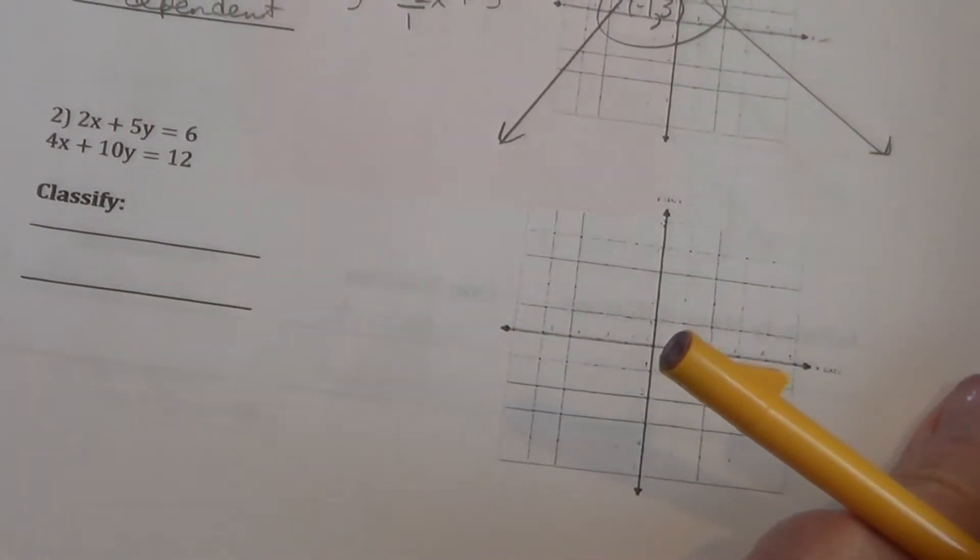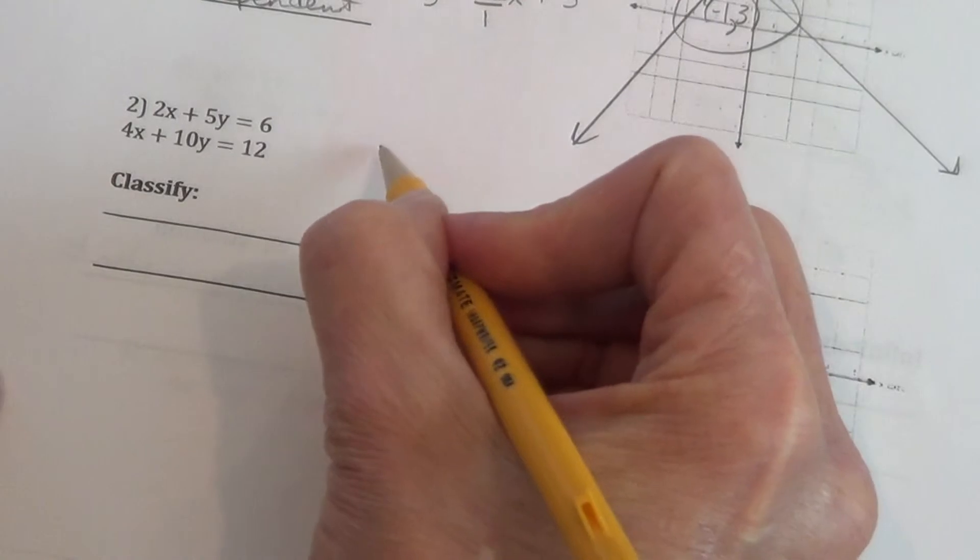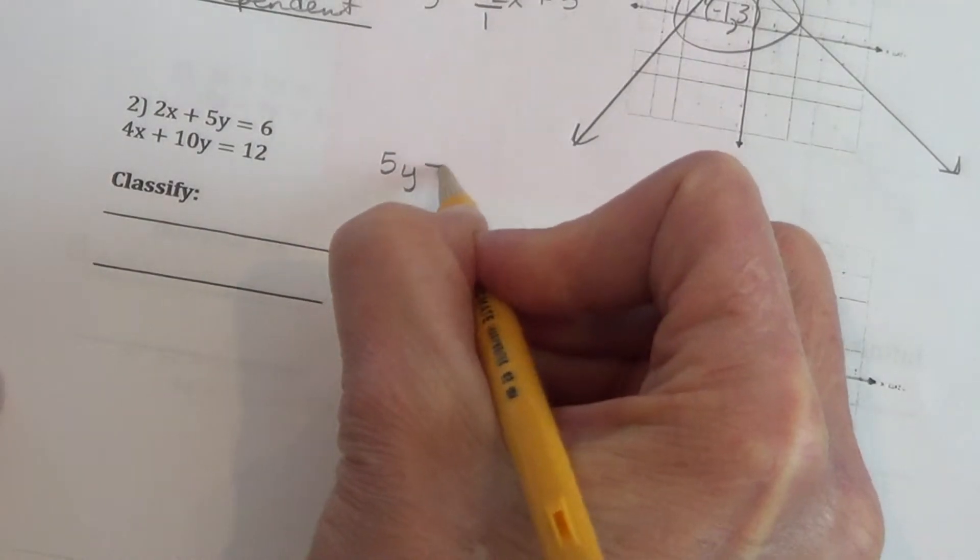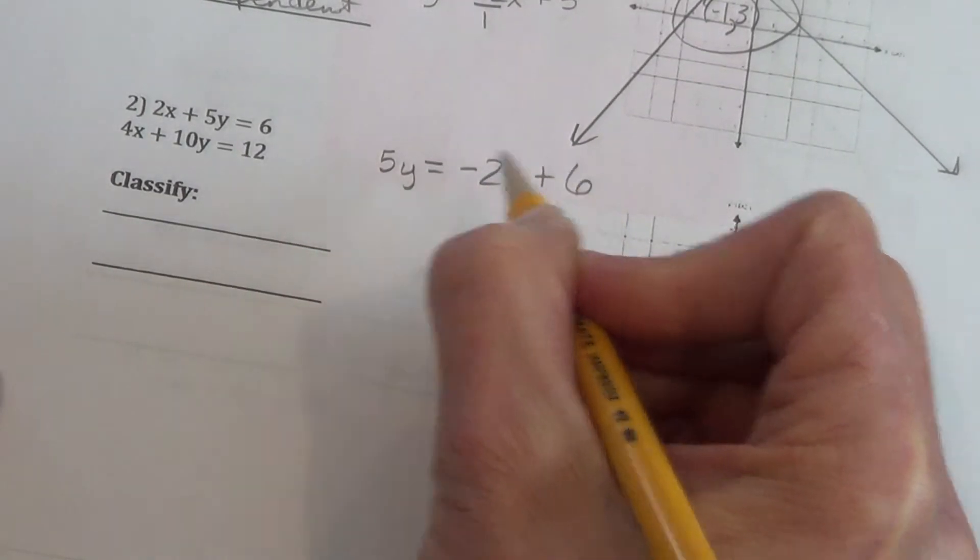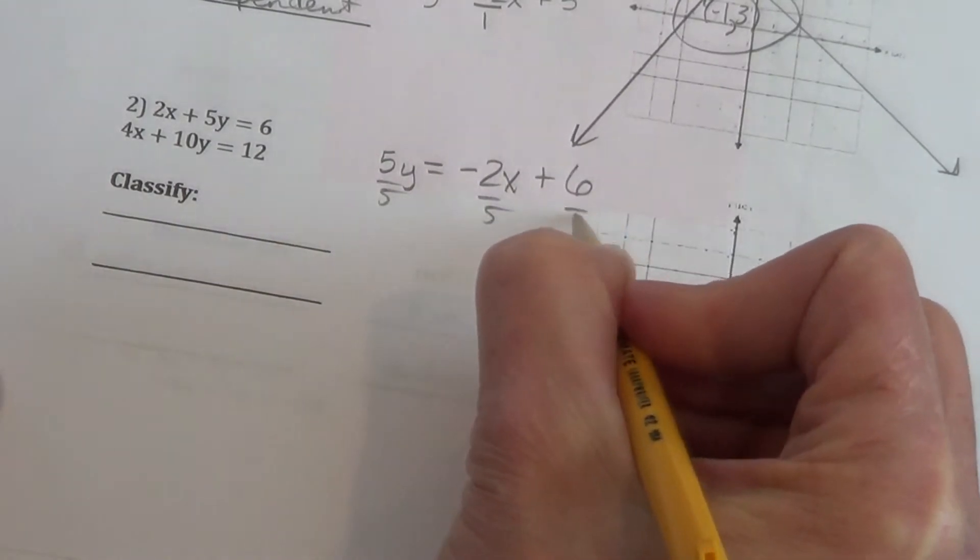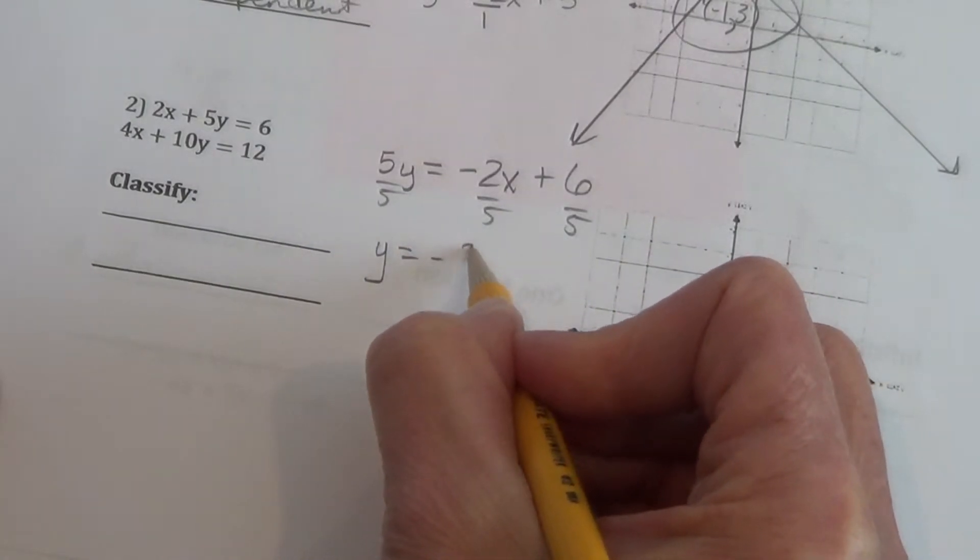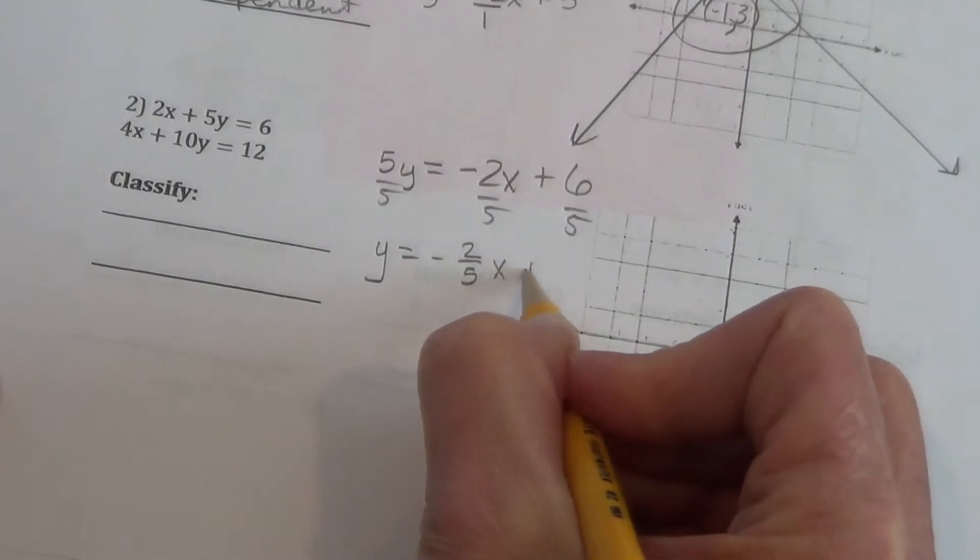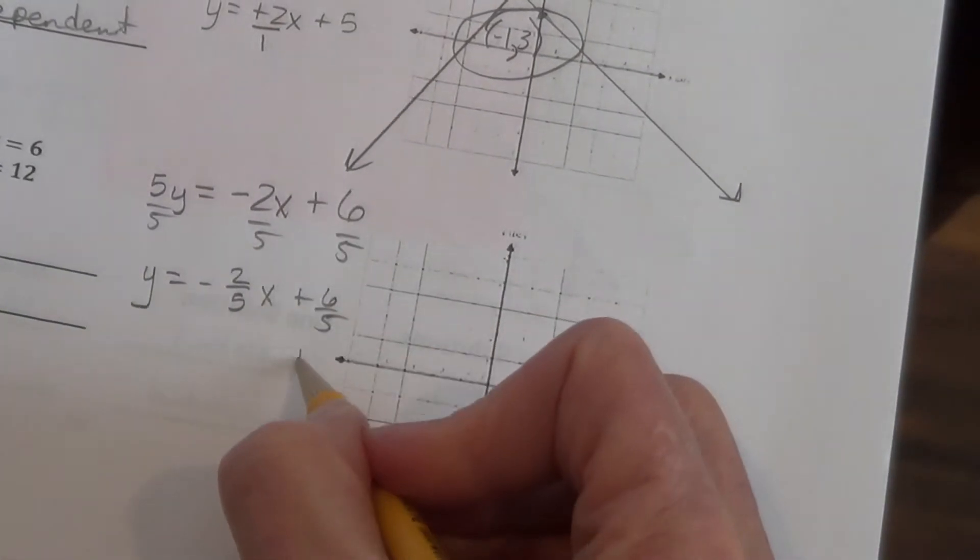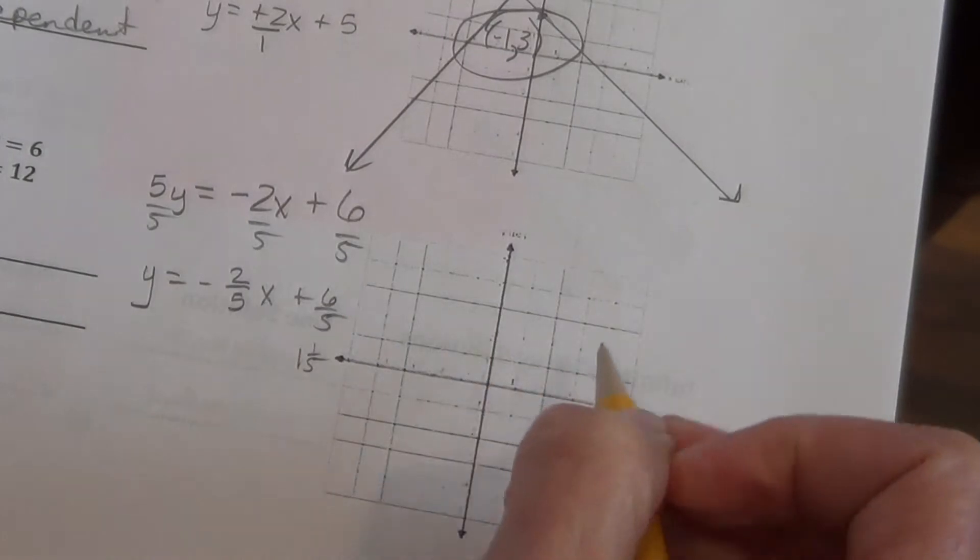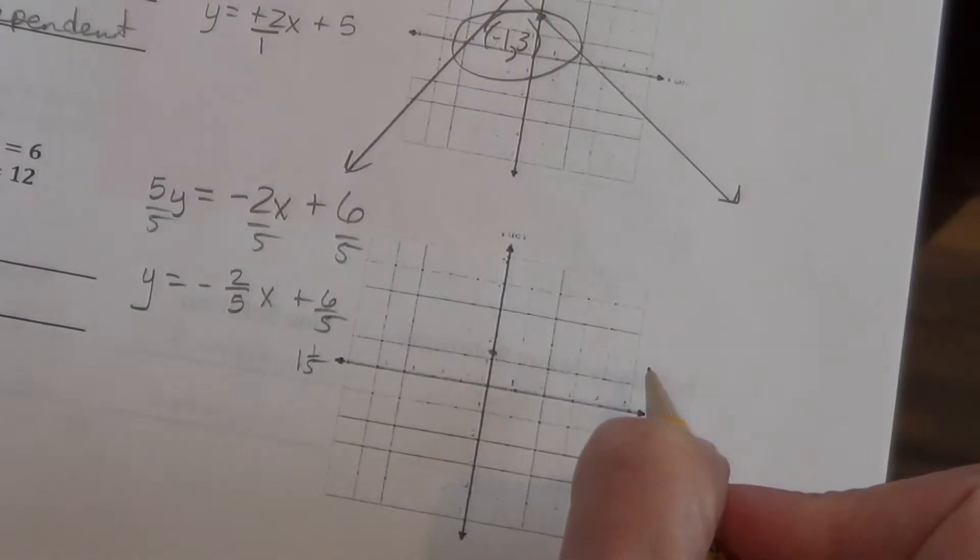The next equation that we're going to graph needs to be manipulated. We need to take and subtract 2x from each side. Now, divide by 5. That should all be reviewed. If you're having trouble knowing how to get that y alone, please come see me or work with another student in class. So, this time it's not as pretty to graph, but we can still do it. 6 over 5 is equal to 1 and 1 fifth. I just divide 5 into 6 with 1 left over. So, we come up to 1 and about 1 fifth, and put our y-intercept.